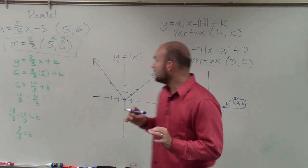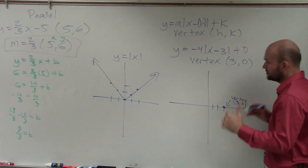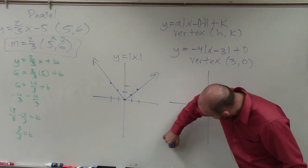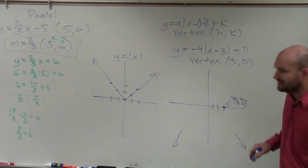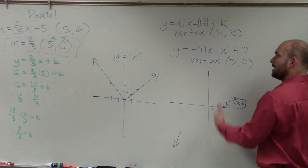Now, what is important is here I have a value of a, which is negative 4. What a tells me is now my graph is going to be reflected over the x-axis. So rather than opening up, when it's negative, it now opens down.